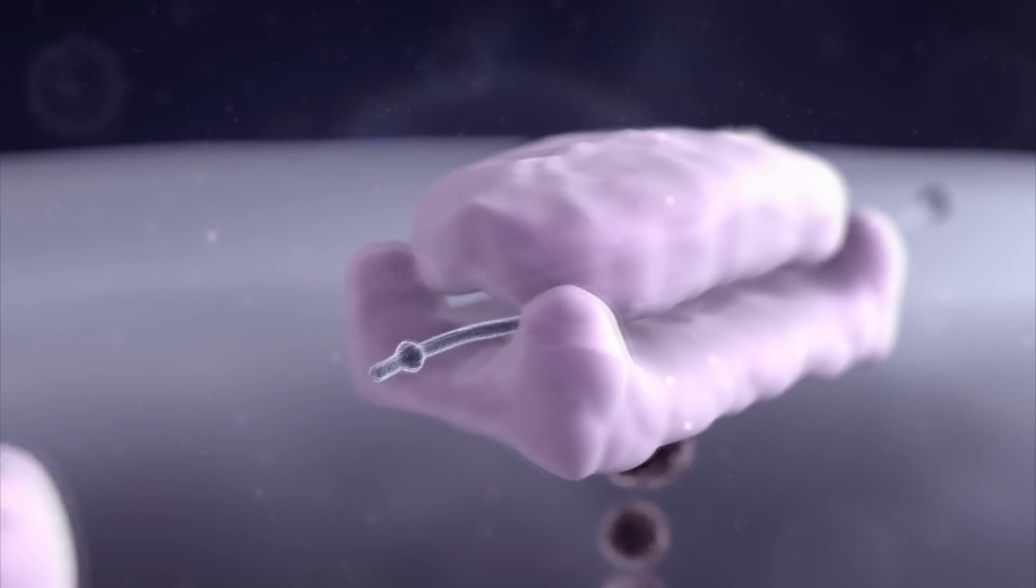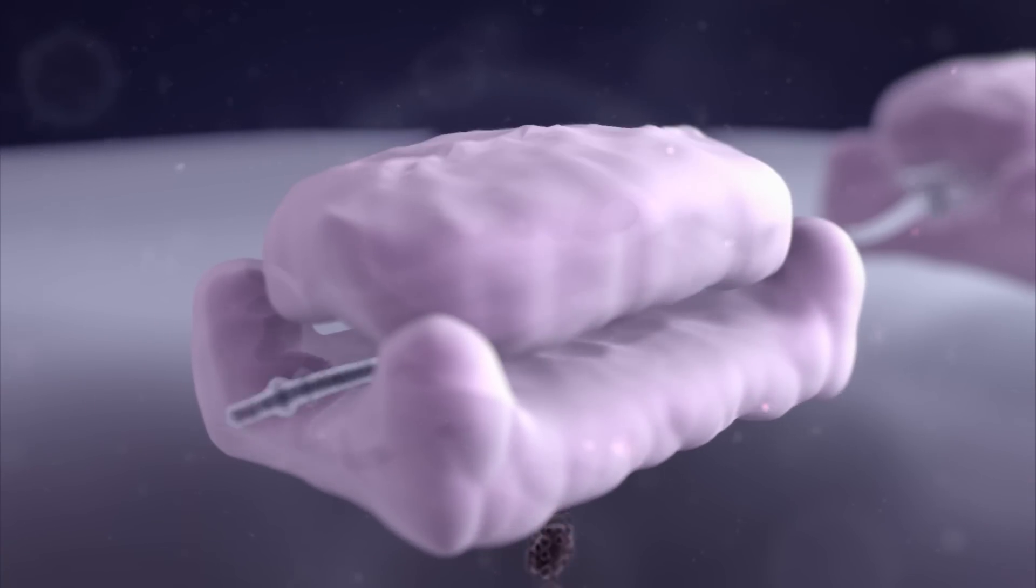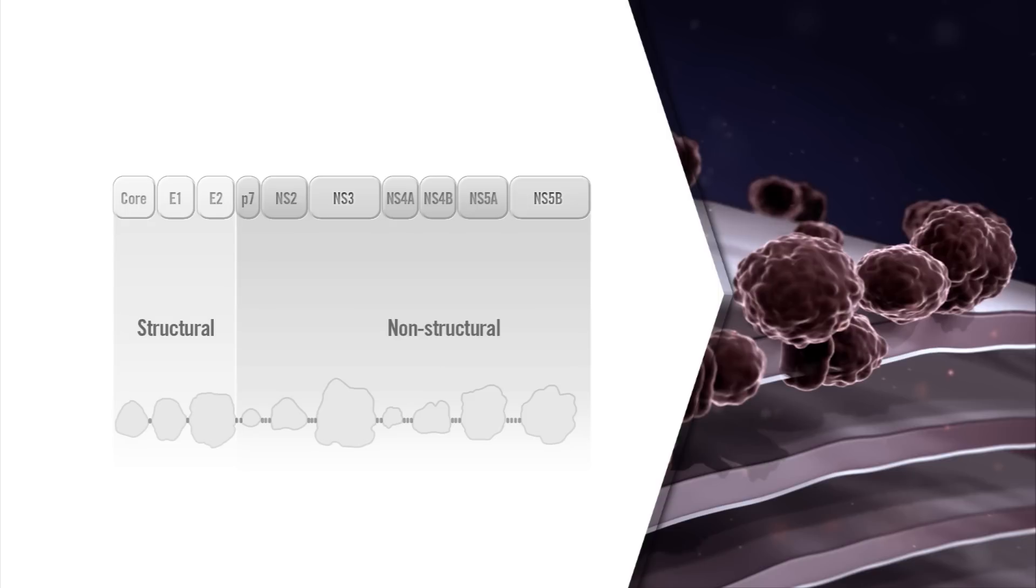This results in the formation of the hepatitis C polyprotein within the endoplasmic reticulum membrane. The resulting HCV polyprotein consists of 10 structural and non-structural proteins that play essential roles in the virus life cycle and represent potential targets for pharmacologic intervention.